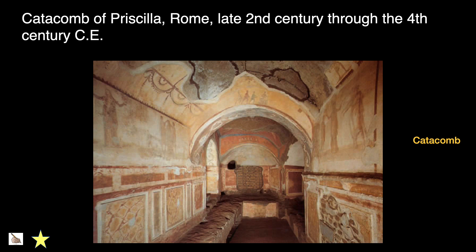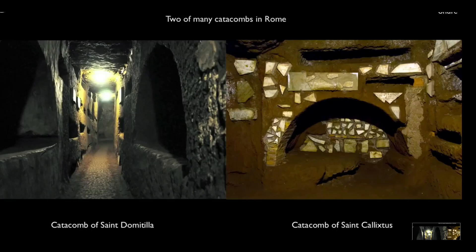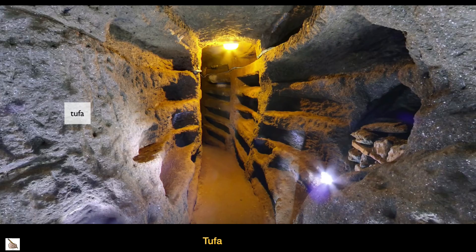Catacombs of Priscilla, Rome, late 2nd century through the 4th century CE. A catacomb is an underground cemetery consisting of a subterranean gallery with recesses for tombs, as constructed by the ancient Romans. It was illegal to bury the dead within the walls of Rome, so these underground burial chambers were located outside the walls. Tufa is a soft, porous, sedimentary rock - think of it as volcanic-like.